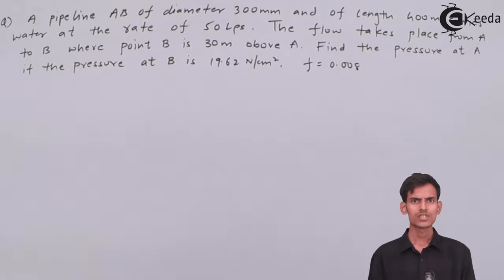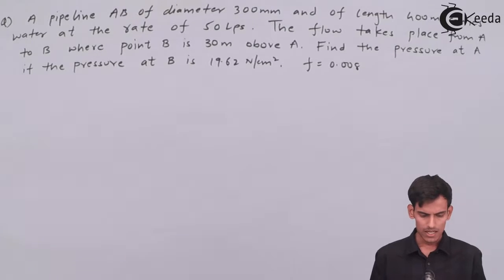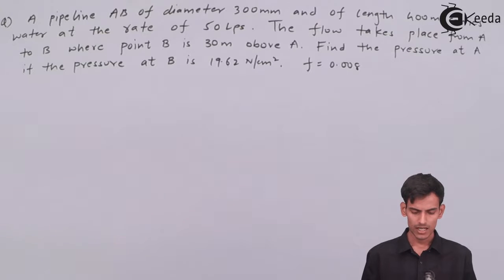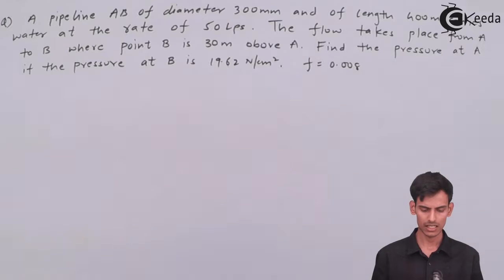So the fourth question is, I'll read out the question. A pipeline AB of diameter 300 mm and of length 400 meter carries water at the rate of 50 liters per second. So the discharge is given in terms of LPS, you need to convert to meter cube per second. The flow takes place from A to B where point B is 30 meter above point A. Find the pressure at A if the pressure at B is 19.62 Newton per centimeter square. So the pressure at B is given, the pressure at A has to be found and the value of friction factor is given as 0.08.